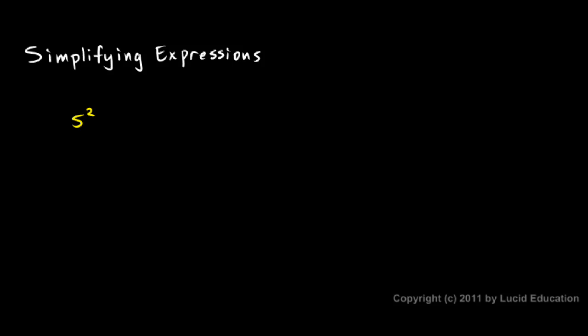A very important and very basic part of algebra is simplifying expressions, and that's what this section is about. Remember what an expression is — it's numbers and variables combined with arithmetic operators. For example, 5 squared is an expression. 1 half bh is an expression — you might recognize that as the formula for the area of a triangle. 2l plus 2w is an expression, and you might recognize that as the formula for the perimeter of a rectangle, 2 times the length plus 2 times the width. All of these are mathematical expressions.